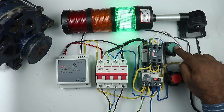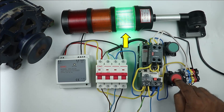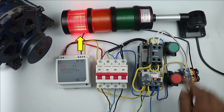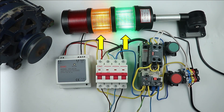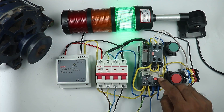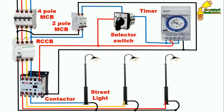If you want to know how to do the connection of a signal tower light with an electrical circuit, click on the video on the right side. I hope you liked this video. If you did, please give a like, share, and comment, and please subscribe to our channel.